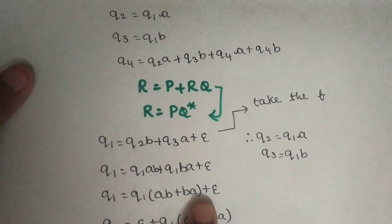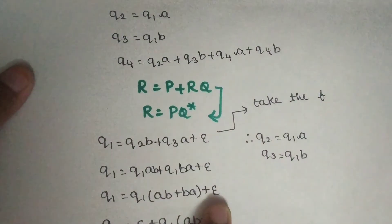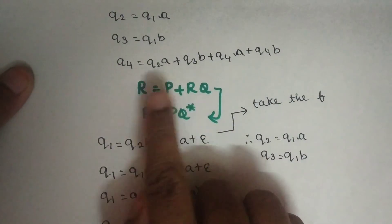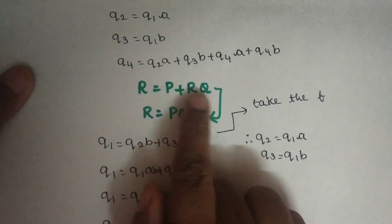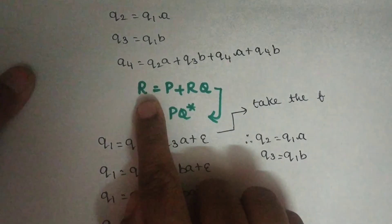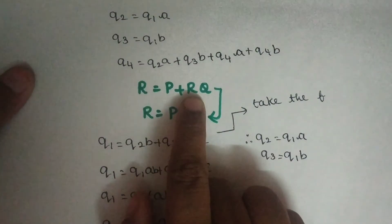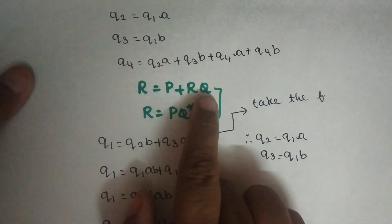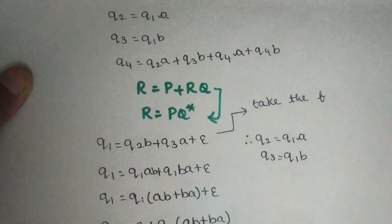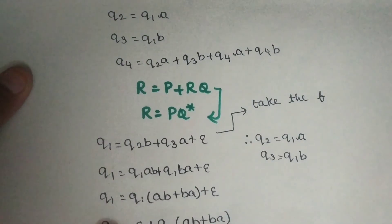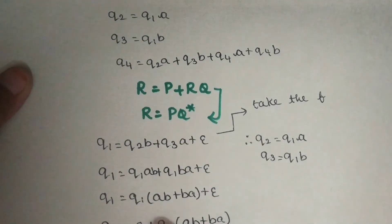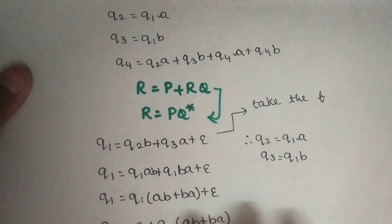This gives AB plus BA plus Epsilon. Generally there are states like Q1 and Q1 — there is a PQ pattern. So looking at Q1: Epsilon plus Q1 times AB plus BA. I say this is in the format R equals P plus RQ.